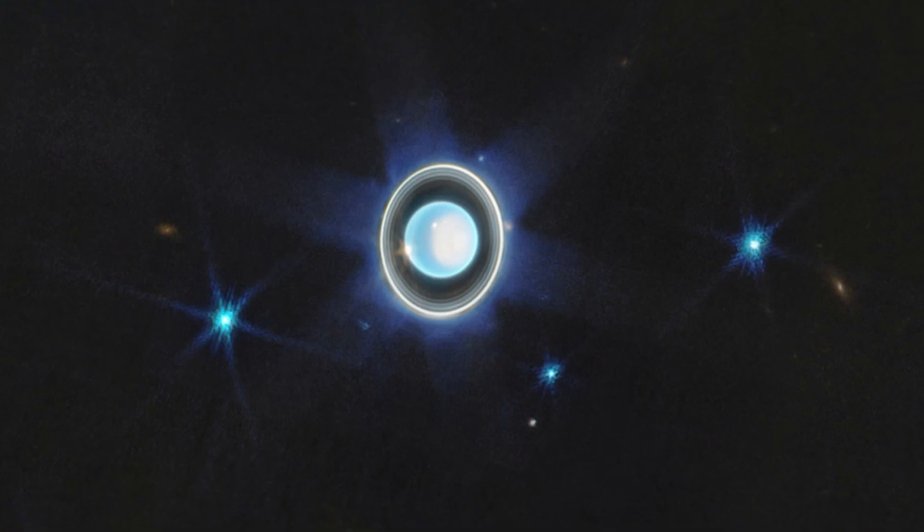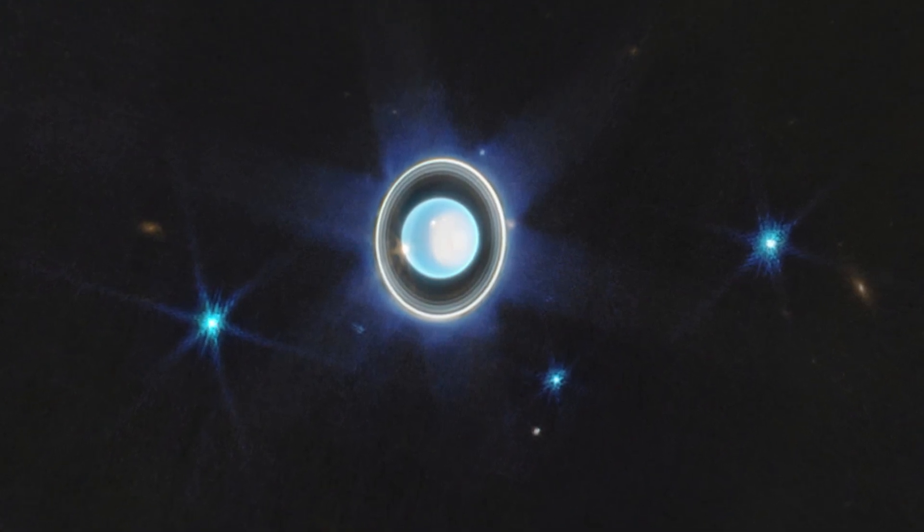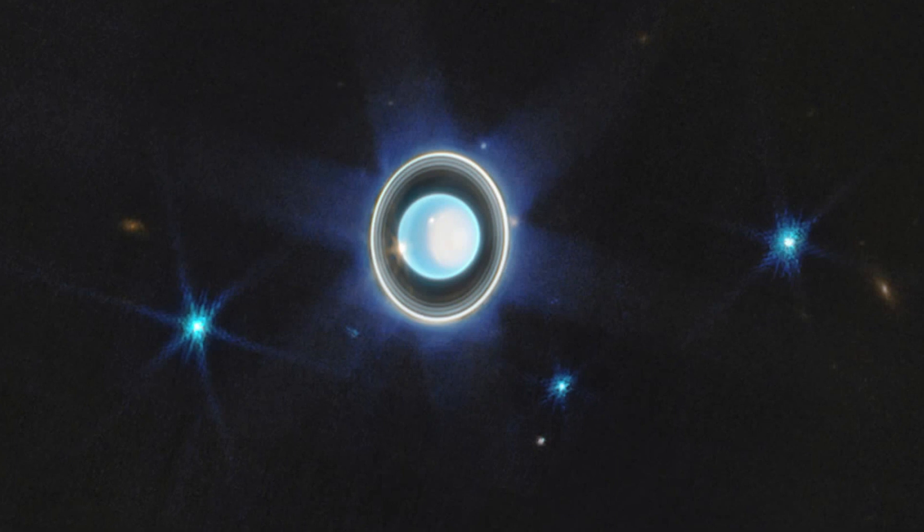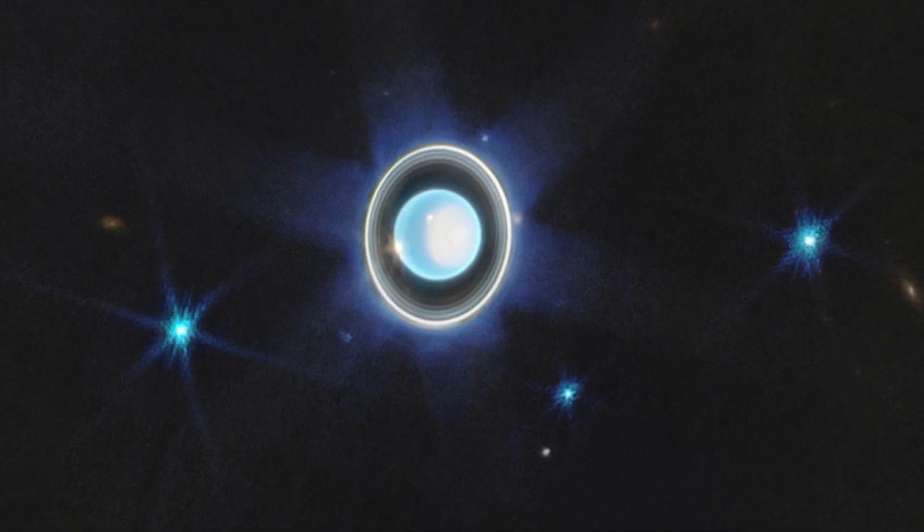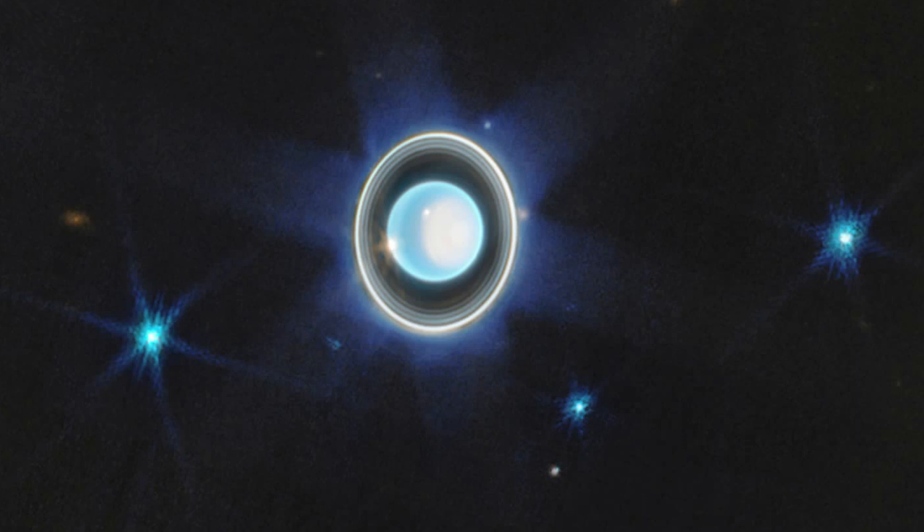Webb's remarkable sensitivity enabled the capture of Uranus' faint inner and outer rings, encompassing the elusive zeta ring, an exceptionally faint and diffuse ring closest to the planet.